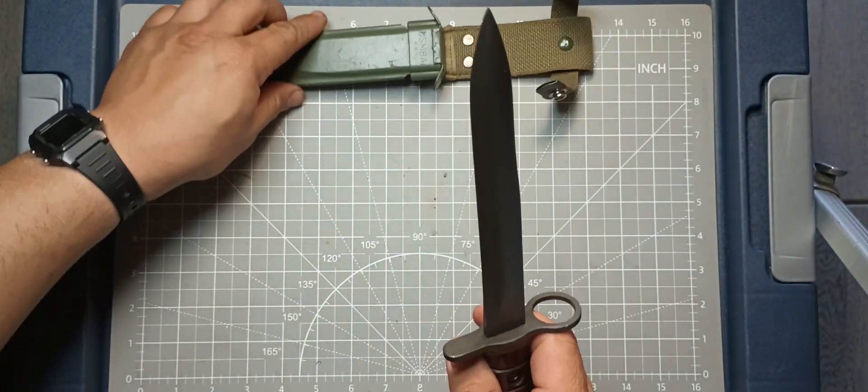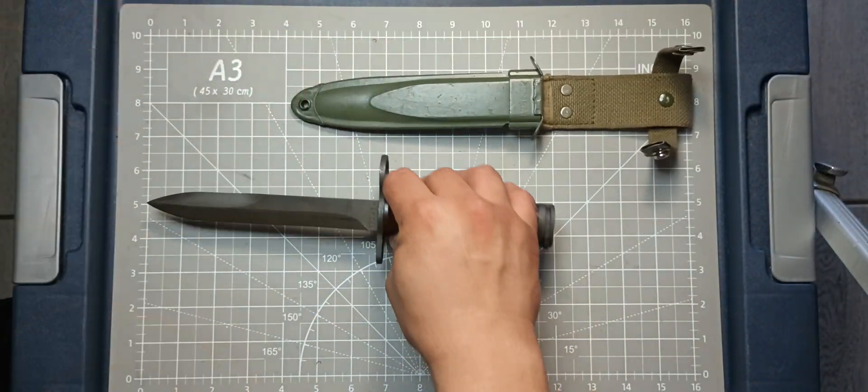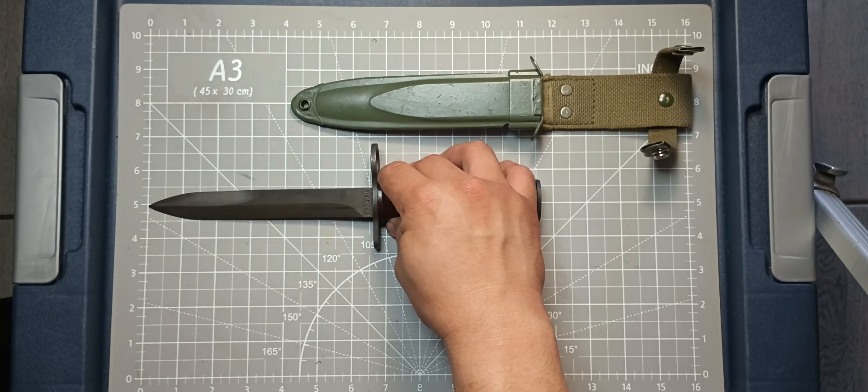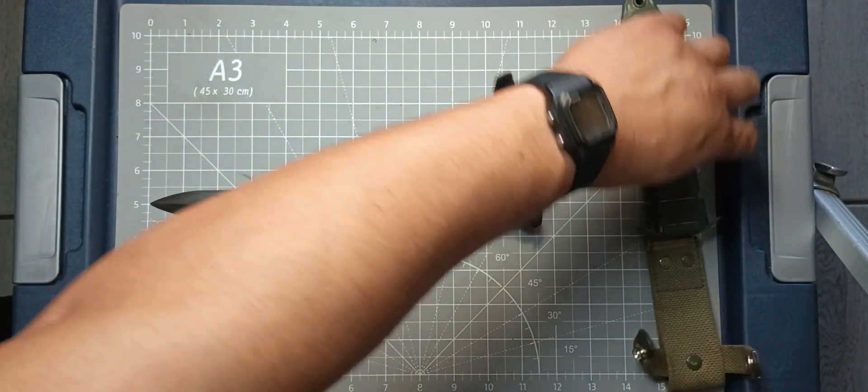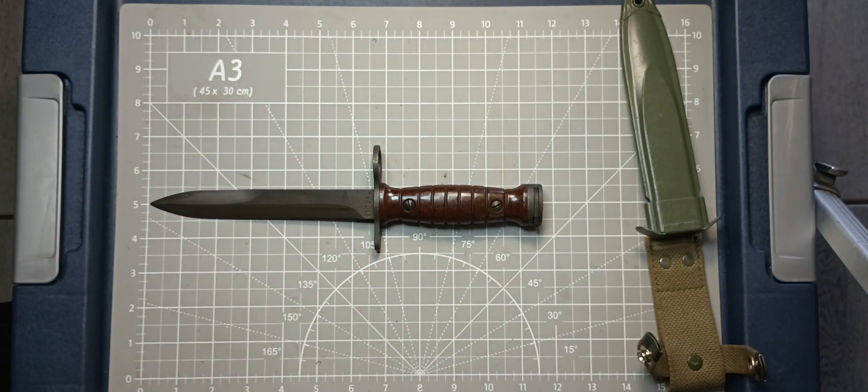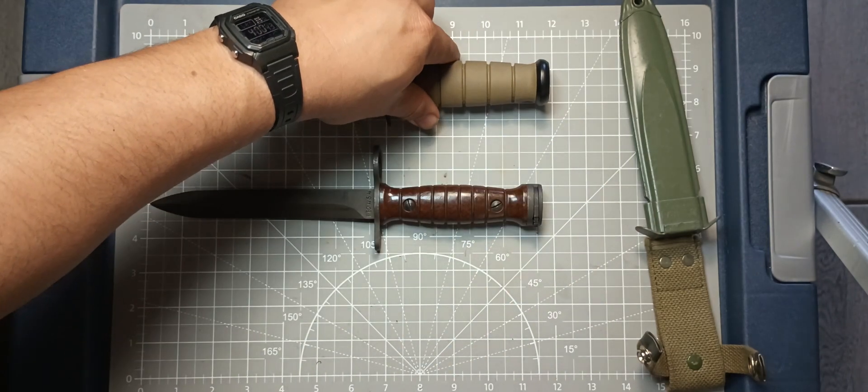Let's give it a quick size comparison here to another blade that might work with this. This is 11 and a half inches. Just short, under 12 inches. And, we'll go with the actual field utility knife, right? The K-bar.